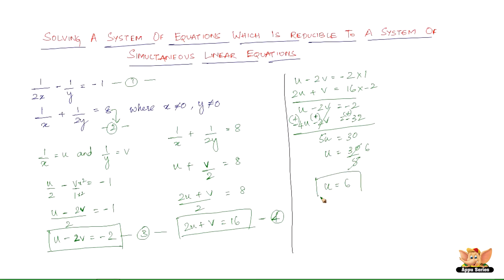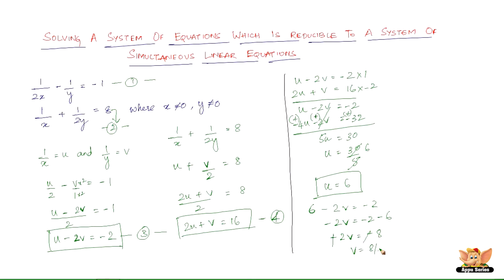Now let us substitute the value of u into equation 3 to find v. Substituting u equals 6: 6 minus 2v equals minus 2, so minus 2v equals minus 2 minus 6, which is minus 8. The negatives cancel, giving v equals 8/2, which equals 4. So v equals 4.